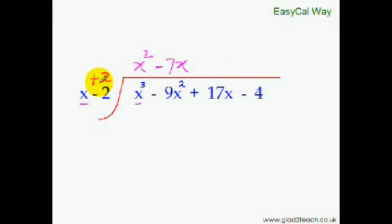So once again repeat the same process. Multiply this plus 2 with this minus 7x and add it to the next term of the dividend. 2 times minus 7x is minus 14x. Minus 14x plus 17x will be plus 3x. So we will put plus 3 and we have got the final answer.